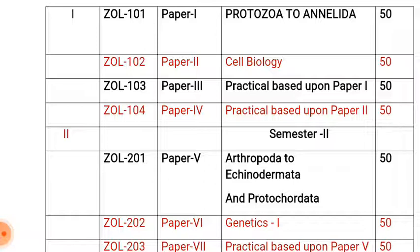There is paper one: Protozoa to Annelida. That is the first paper for B.Sc. Zoology. After that there is the second paper that is called Cell Biology. In concern with that, there are two practical papers — practical paper one, based on paper one, and practicals based on paper two — meaning the two practical papers are merged into a single paper.